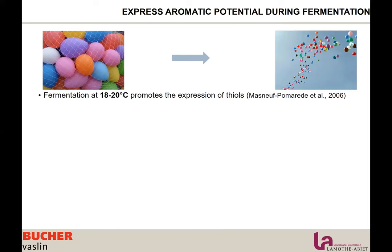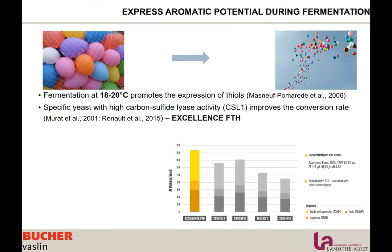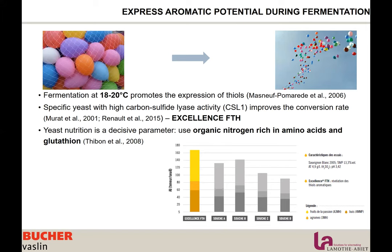There is a lot of research on this topic. You want to ferment at higher temperature — around 18 to 20°C — to promote the expression of these thiols and increase the conversion rate from precursors to volatile. Also use a specific yeast with strong carbon-sulfur lyase activity to improve conversion rate. At La Matabier, we have Excellence FTH, which has the best conversion rate to express thiols, confirmed as the best yeast among many others in studies.